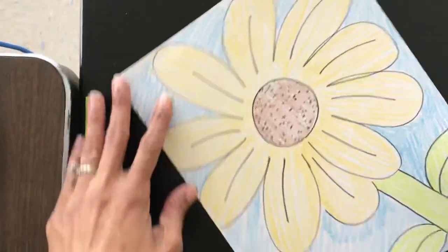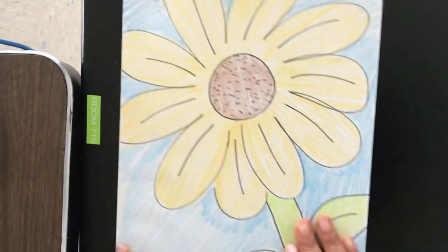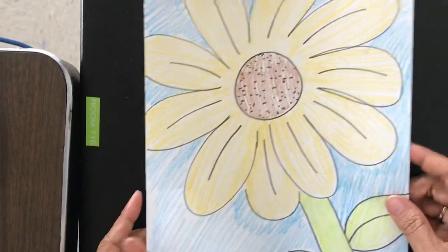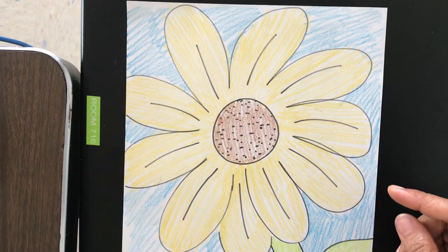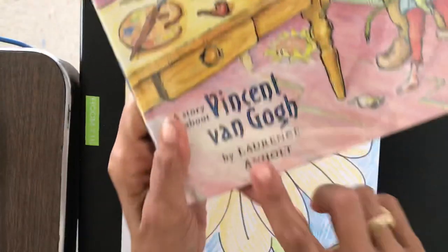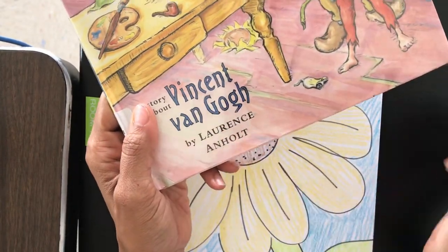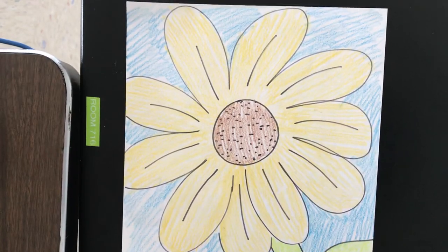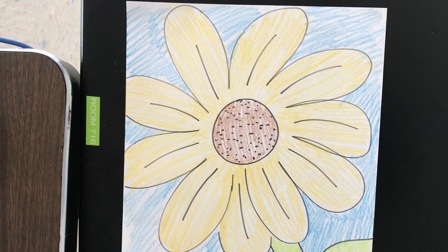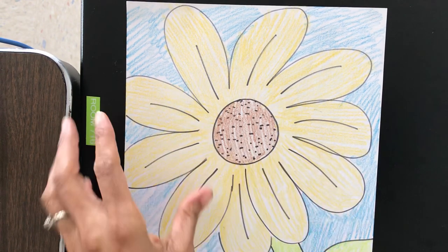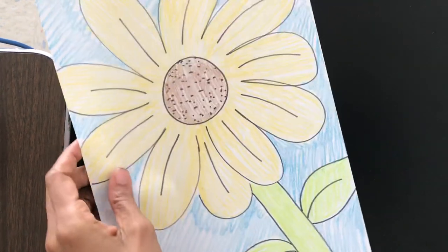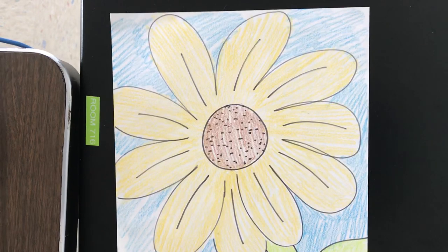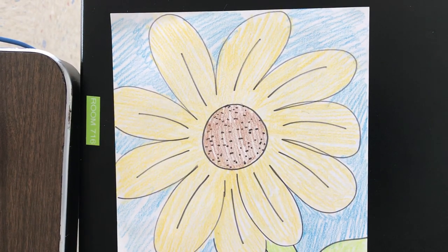All righty guys, there you have it. Your big giant sunflower, courtesy of the artist Vincent Van Gogh, everybody. So you learned about Vincent Van Gogh and you did a sunflower in honor of his birthday. Happy birthday, Vincent Van Gogh. You guys have a great day and I will see you in the hallways. Be good.